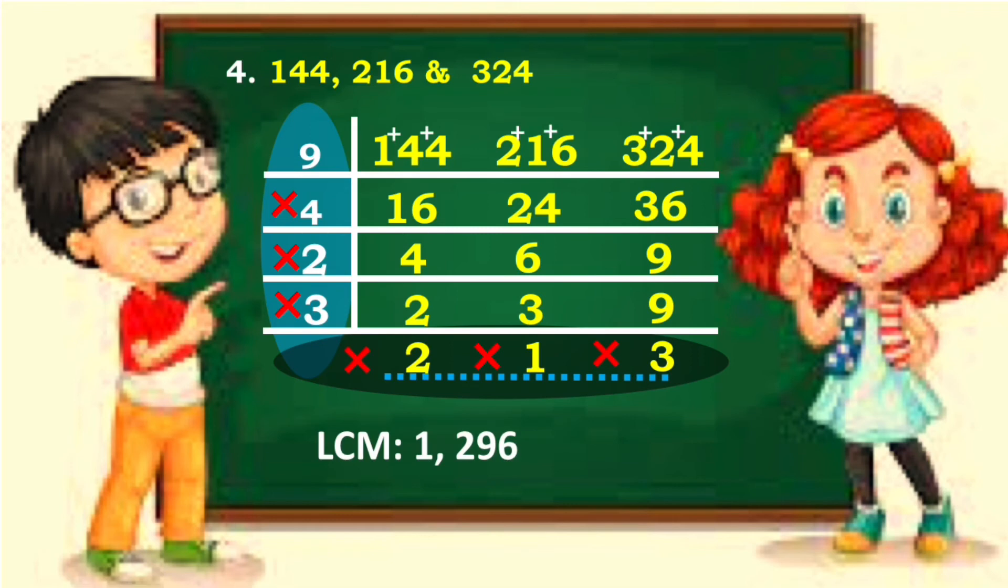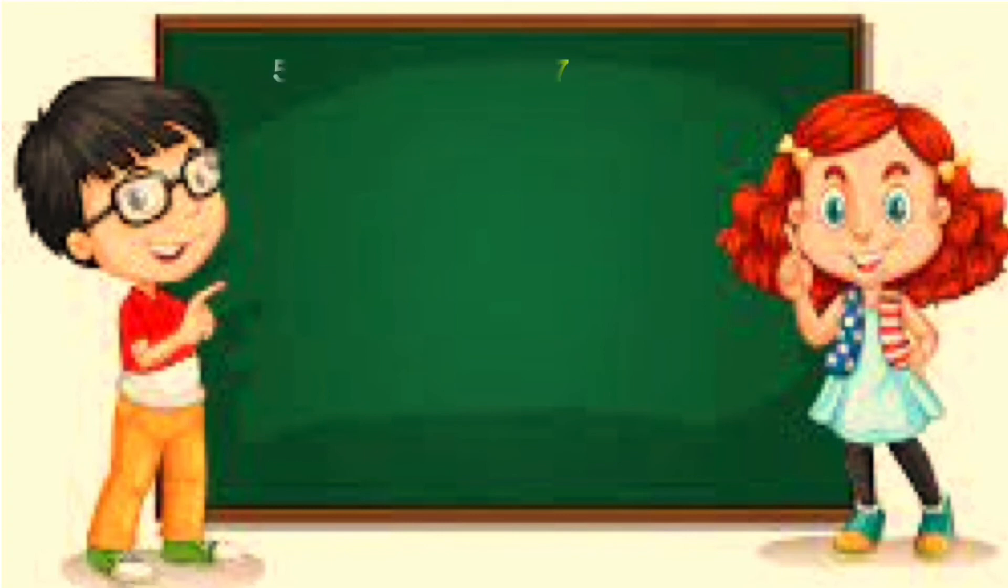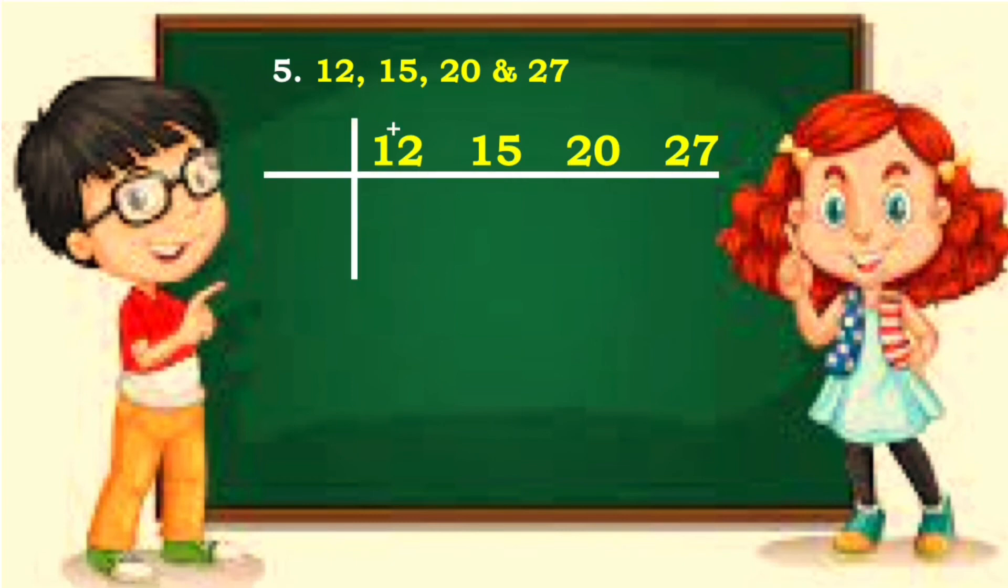For the last item, find the LCM of 12, 15, 20 and 27. Use ladder method again. Notice that 12, 15 and 27 are divisible by 3 if you add their digits. Let's divide.